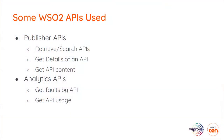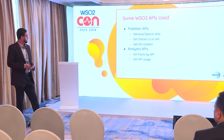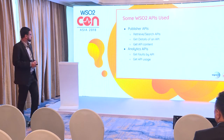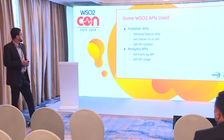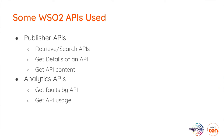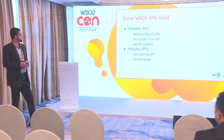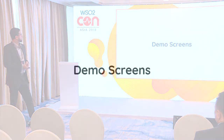These are some of the APIs we have used. From the WSO2 Publisher APIs, we used the retrieve/search APIs to get the list of deployed APIs, the get-details-of-an-API to retrieve the Swagger spec and description, and get API content for any associated documents. To round it off, we also used the analytics APIs — get faults by API and get API usage — which you'll see reflected in the demo screens.